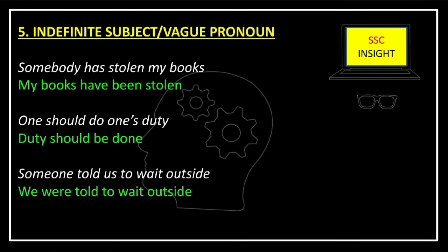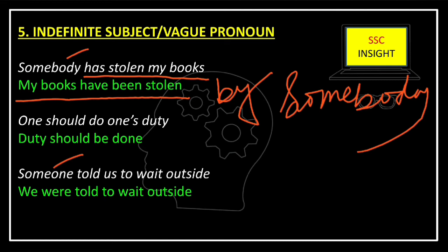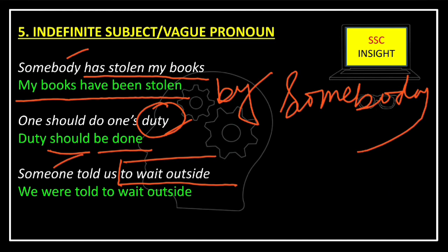When subjects are indefinite or vague pronouns or understood nouns, it is not necessary to use them in passive voice as 'by somebody' or 'by someone.' For example: 'Somebody has stolen my books' — passive: 'My books have been stolen' ('by somebody' is not necessary). Next: 'One should do one's duty' — passive: 'Duty should be done.'